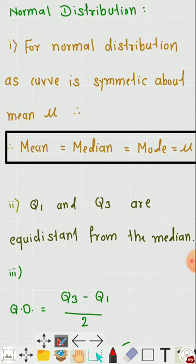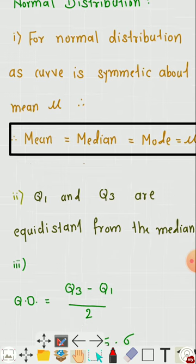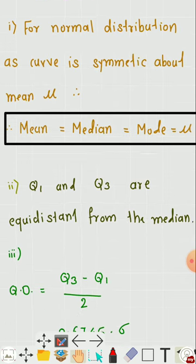The first and third quartiles are equidistant from the median. They are at a distance of 0.6745σ each from μ. Therefore, Q1 = μ − 0.6745σ and Q3 = μ + 0.6745σ.